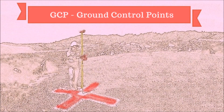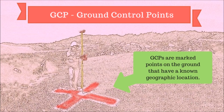To obtain the highest amount of global accuracy in your drone mapping project, the most common and effective method is to use ground control points. GCPs are marked points on the ground that have a known geographic location, meaning each point will have 2D or 3D coordinates assigned to it, depending on how you capture the point.